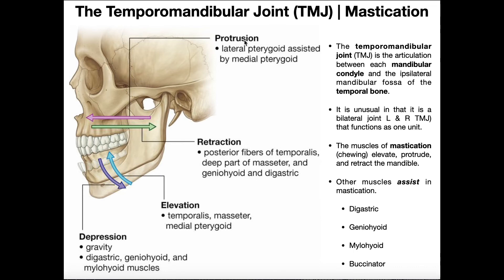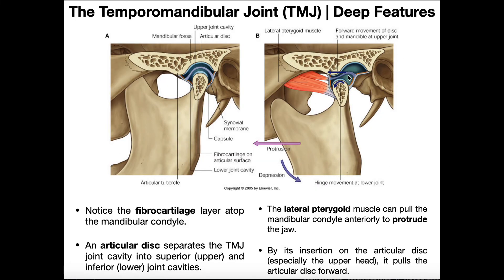The major movements are: protrusion — anterior translation of the mandible, mainly by the lateral pterygoid assisted by the medial pterygoid; retraction — posterior translation, facilitated by the posterior temporalis, deep masseter, geniohyoid, and digastric muscles; elevation — by the temporalis, masseter, and medial pterygoid; and depression — mainly due to gravity, but also the digastric, geniohyoid, and mylohyoid muscles. The lateral pterygoid also assists depression by changing the shape of the articular disc.